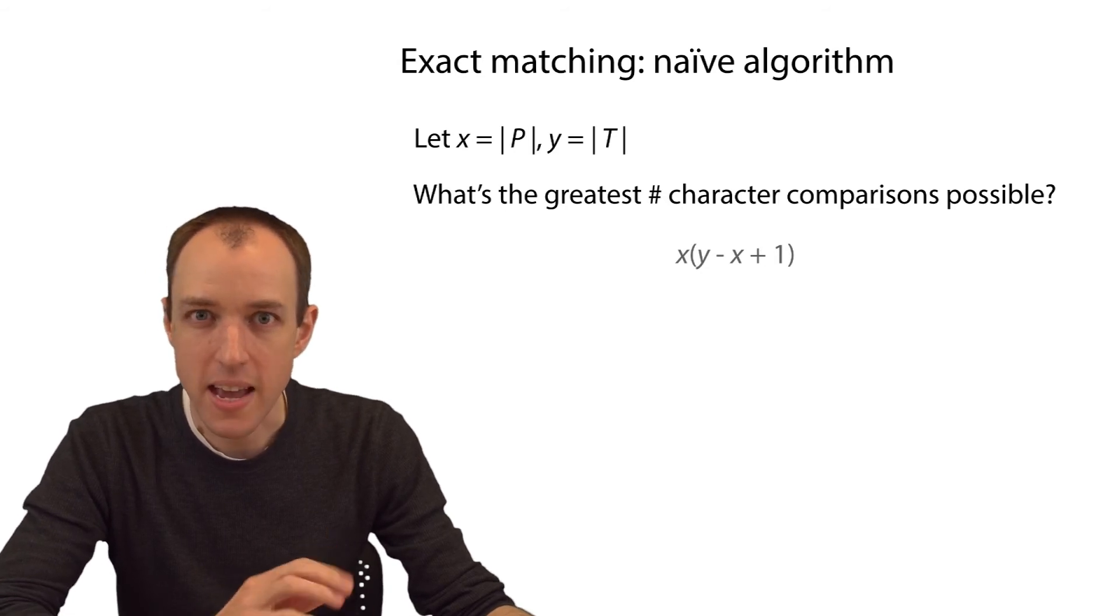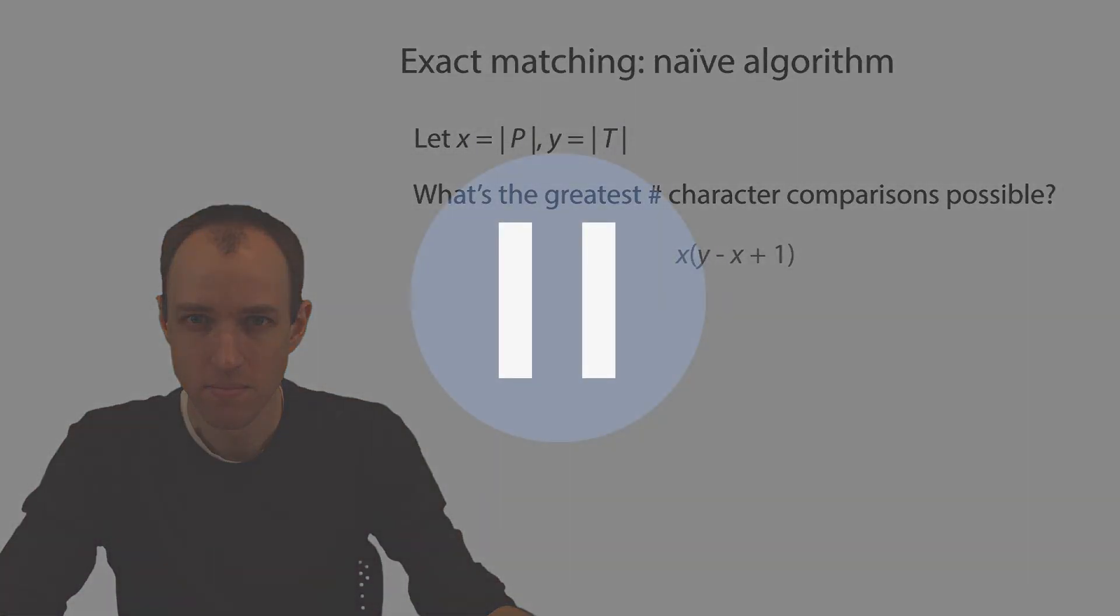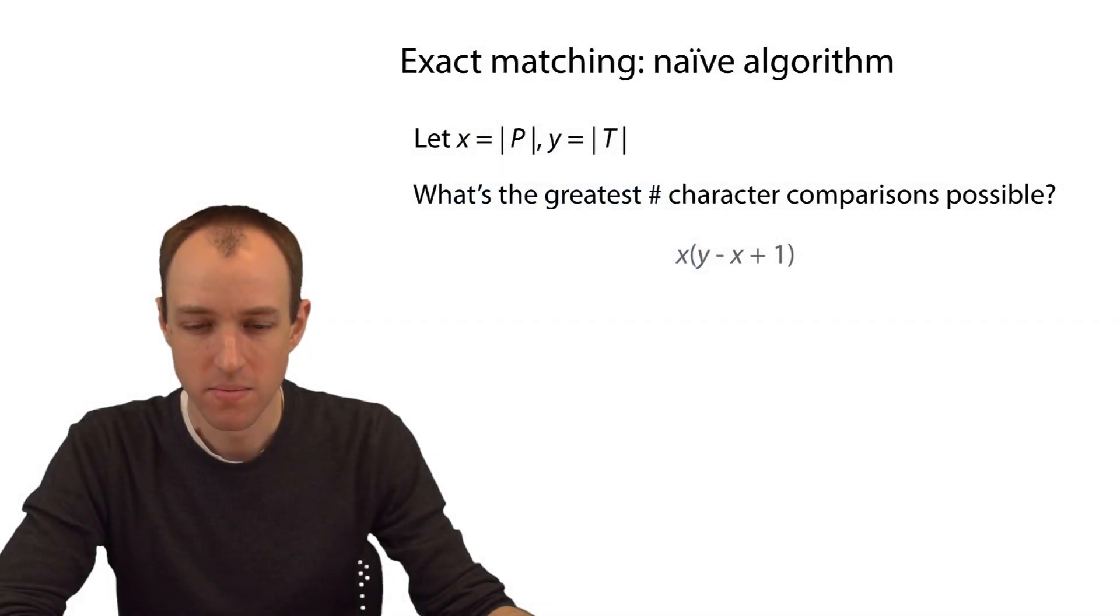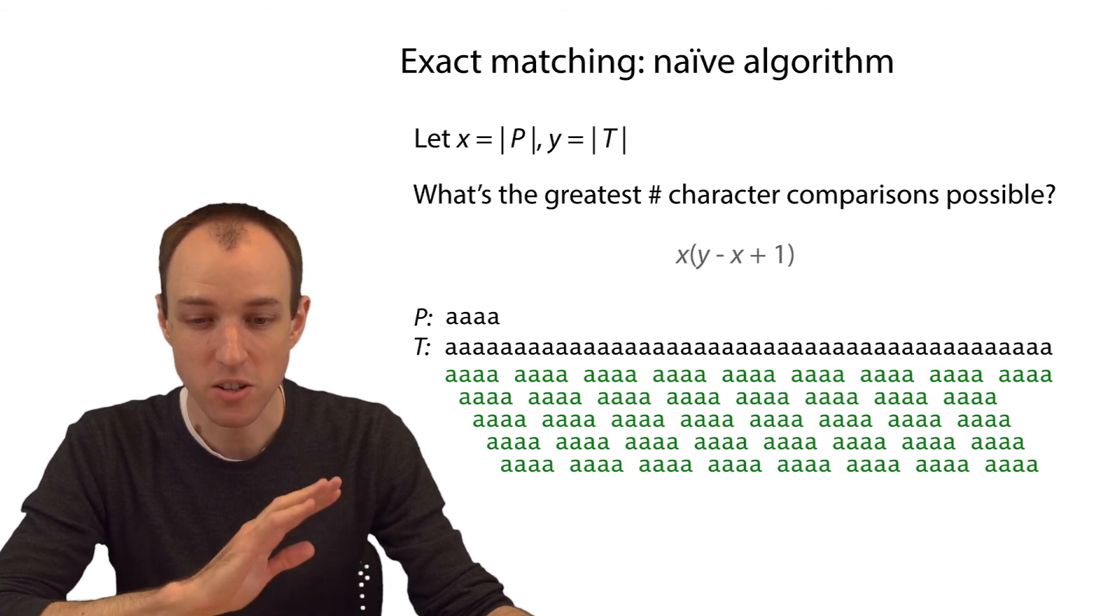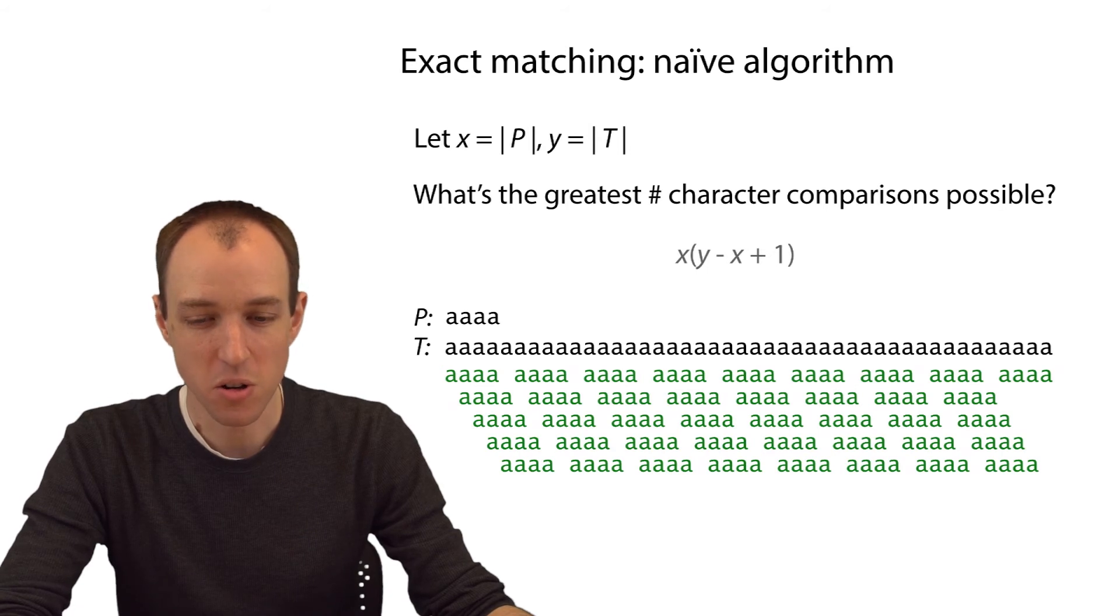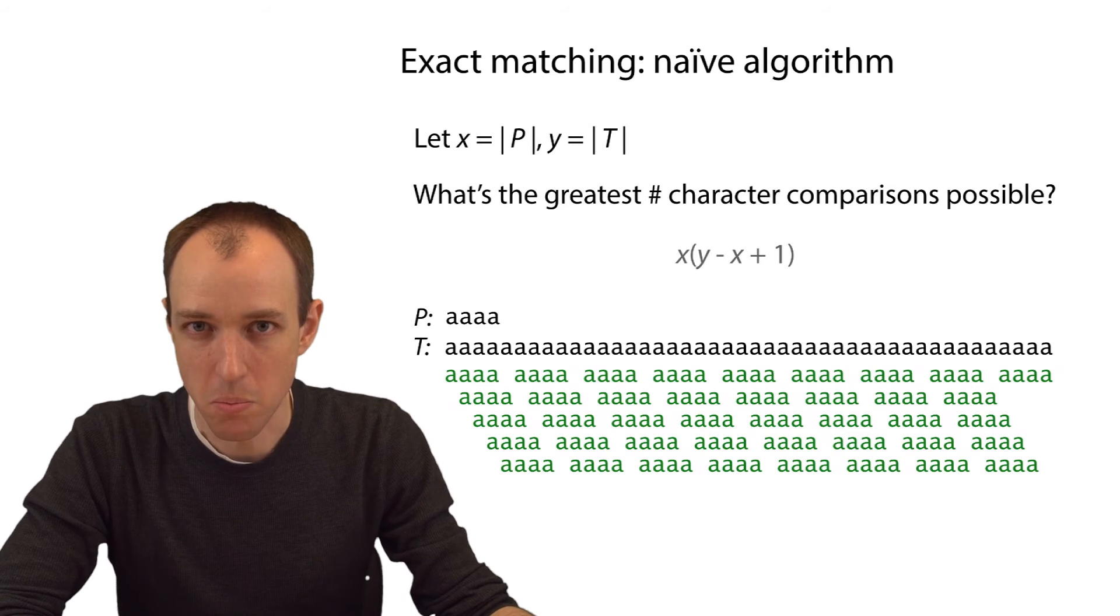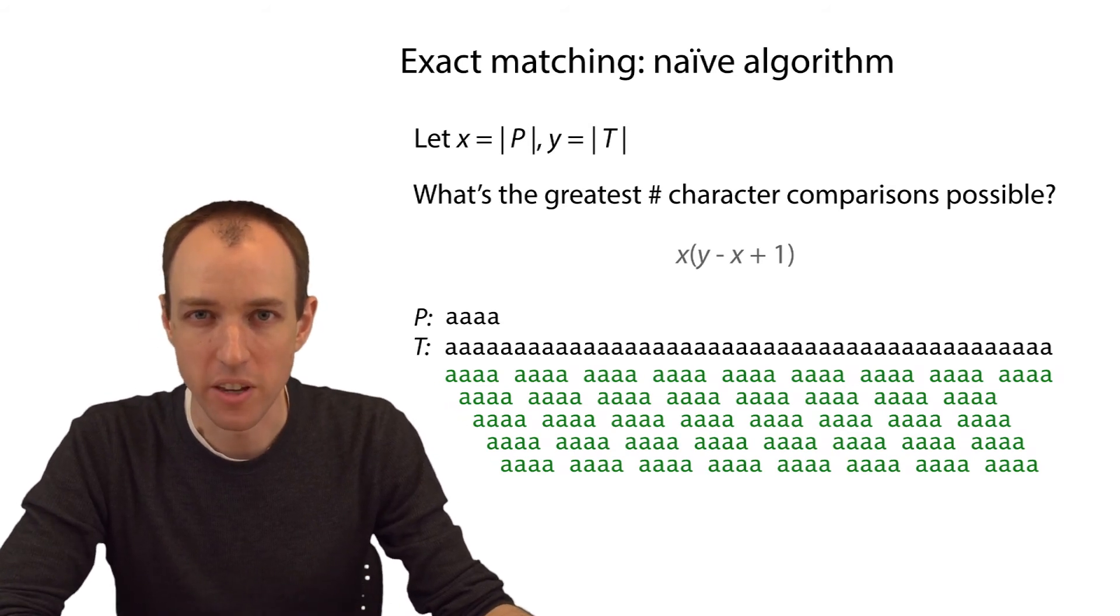This is a kind of worst-case analysis, right? This case seems awfully bad, but when would it actually happen? When would this sort of situation happen? Well, the worst-case scenario looks like this. This is a scenario where every character of P matches every character of T. So every character comparison results in a match, and therefore we go through the inner loop the maximum number of times. That seems like a pretty rare case, but it's good to keep in mind that that's the worst case.